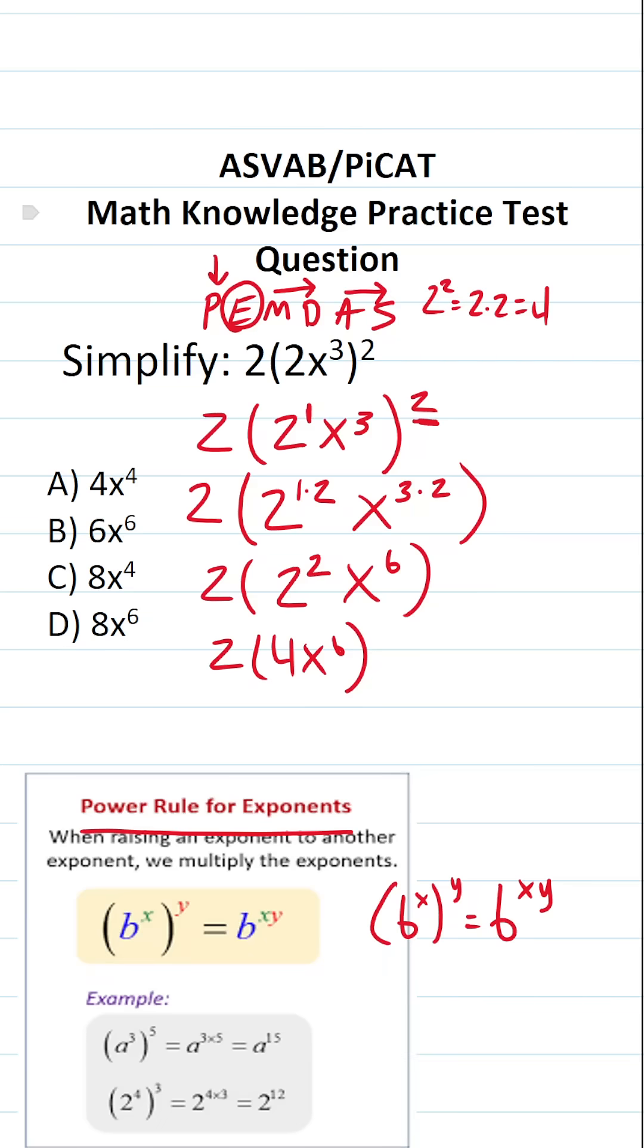What operation do we have left? Again, we just took care of our exponents. The only thing we have left is multiplication. 2 times 4x to the sixth power is going to be 8x to the sixth power. So the answer to this one is d.